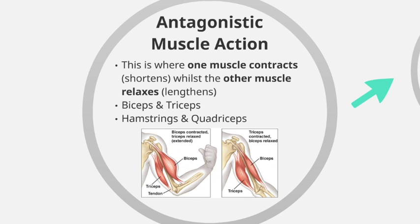Antagonistic muscle action means that one muscle contracts or shortens whilst the other muscle it's paired with relaxes and lengthens. Common examples you need to know are the biceps and triceps, and the hamstrings and quadriceps — these are two examples of antagonistic pairs.